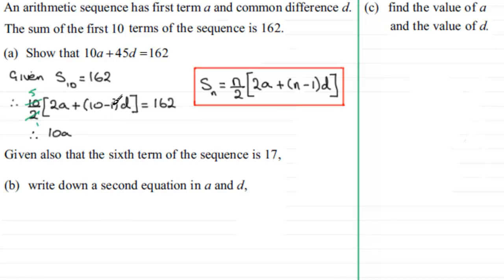And then we've got 9D here, so 5 times 9D is going to be plus 45D. And that's going to equal the 162 here. And that's what we had to show.